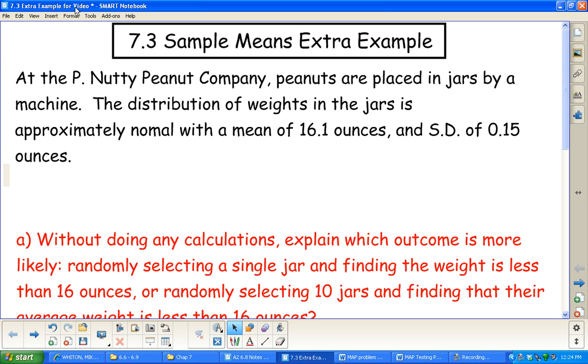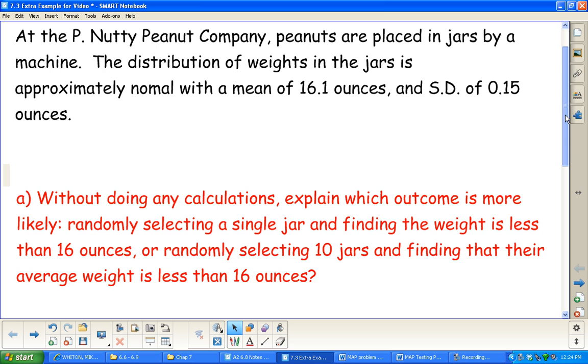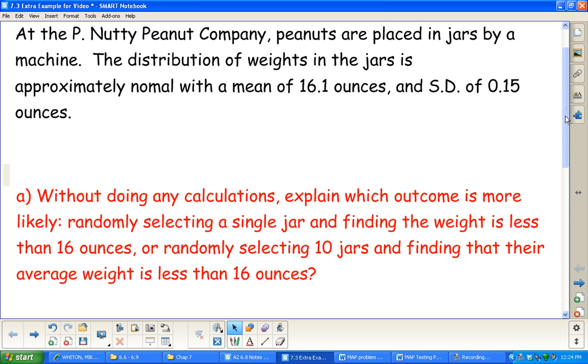Okay, here's the extra example from 7.3 dealing with sample means. In this situation at the P. Nutty Peanut Company, peanuts are placed in jars by a machine. The distribution of weights in the jars is approximately normal.